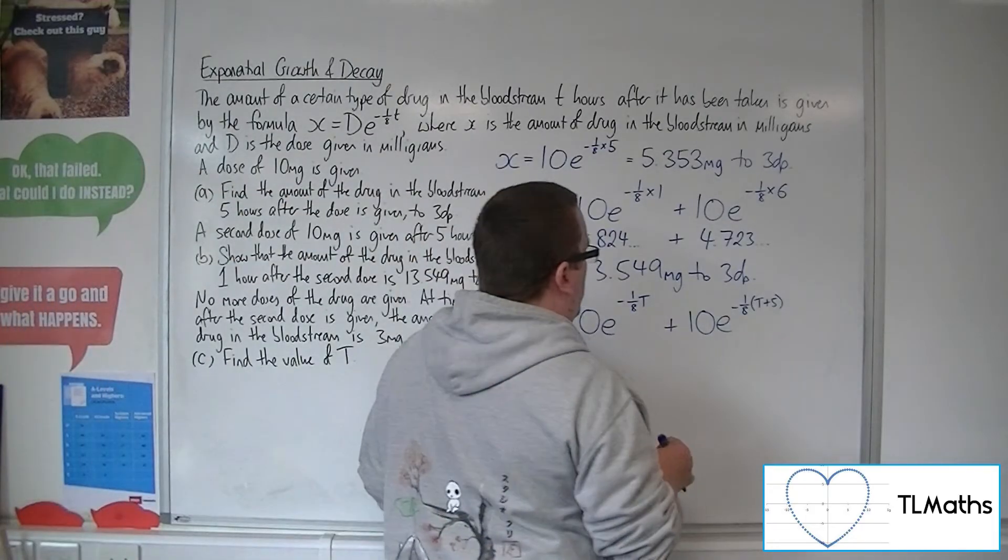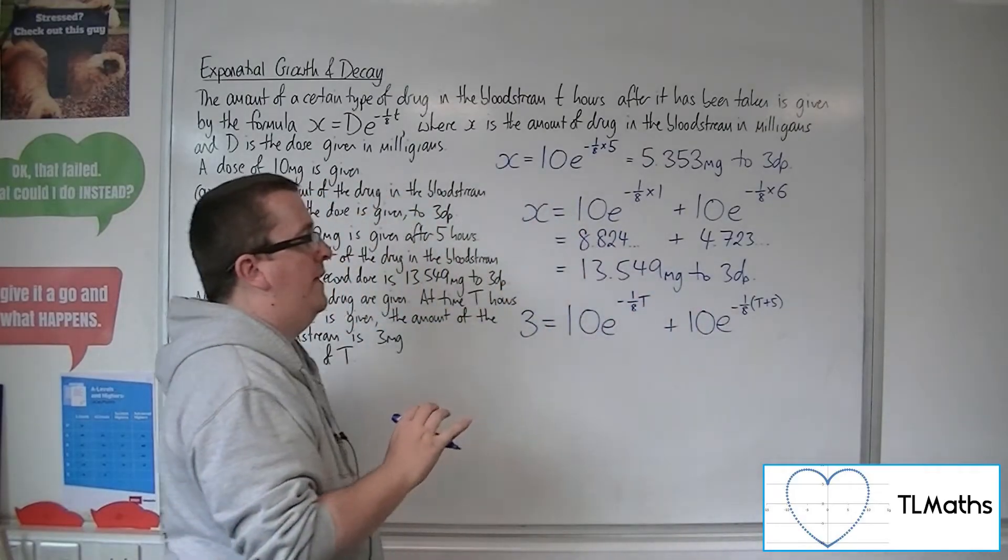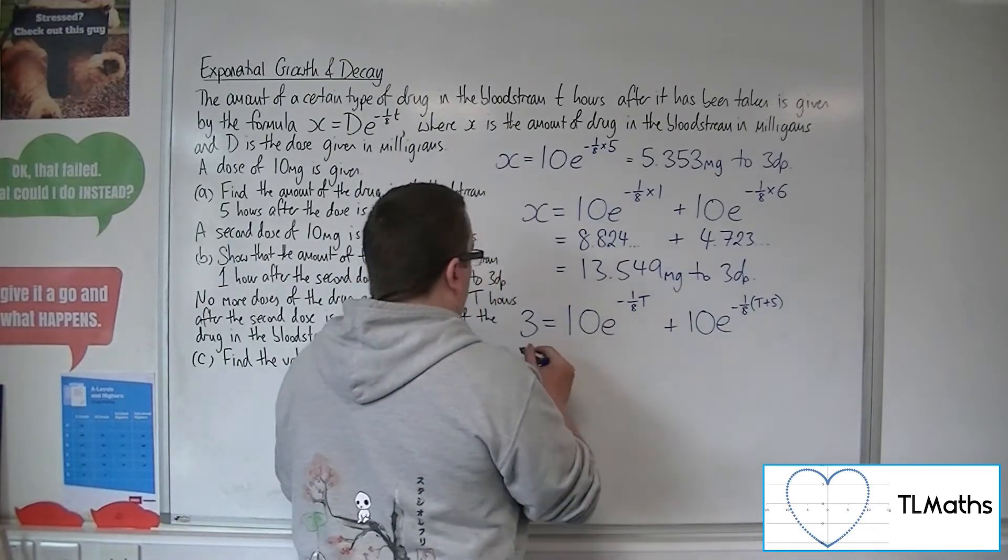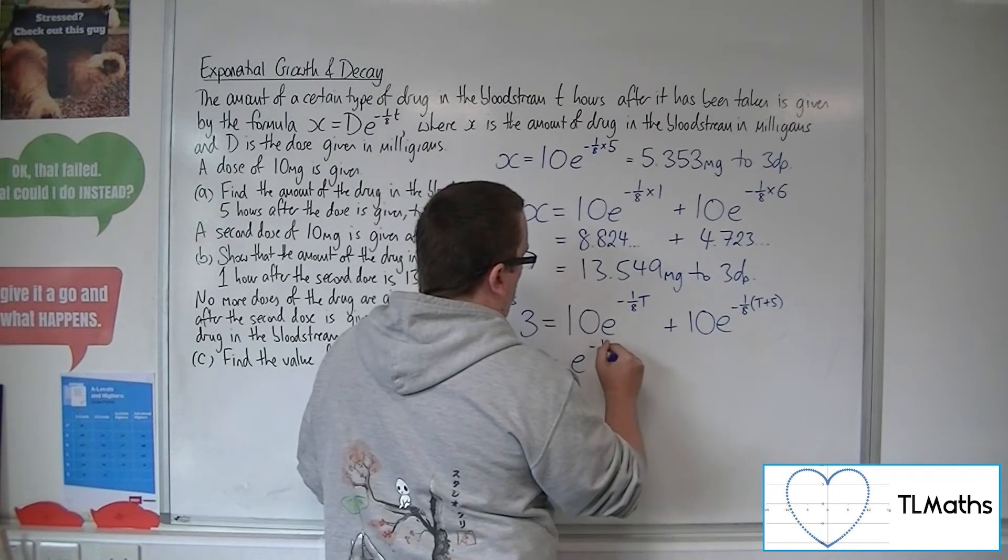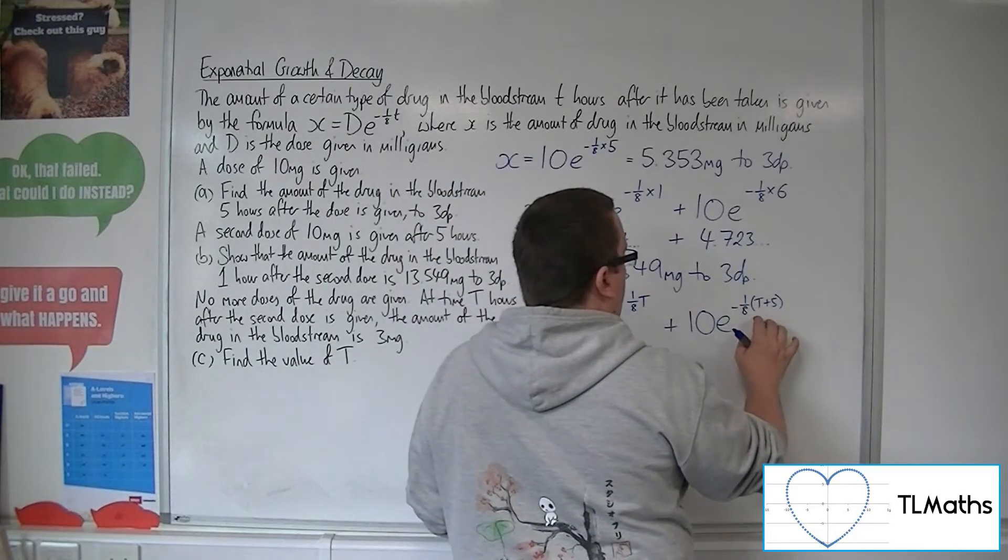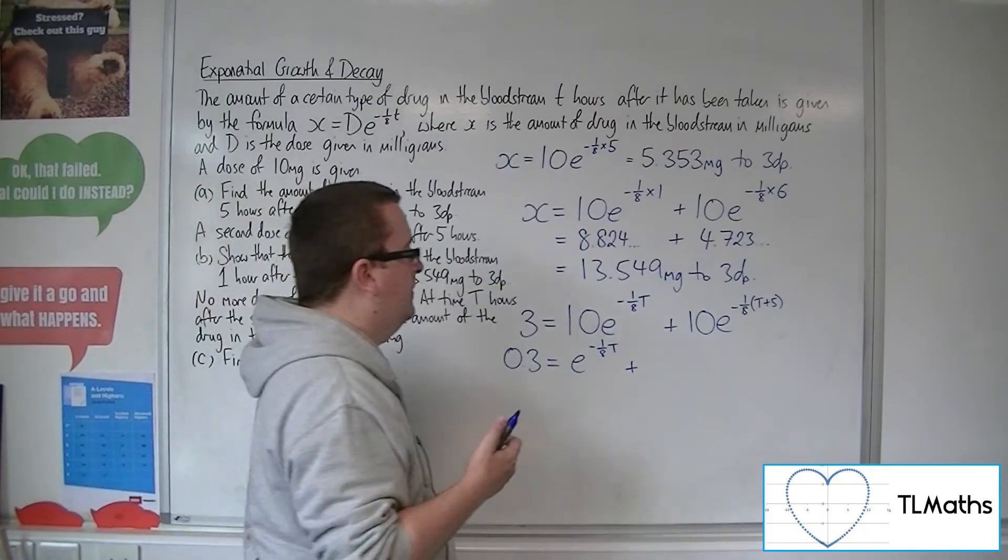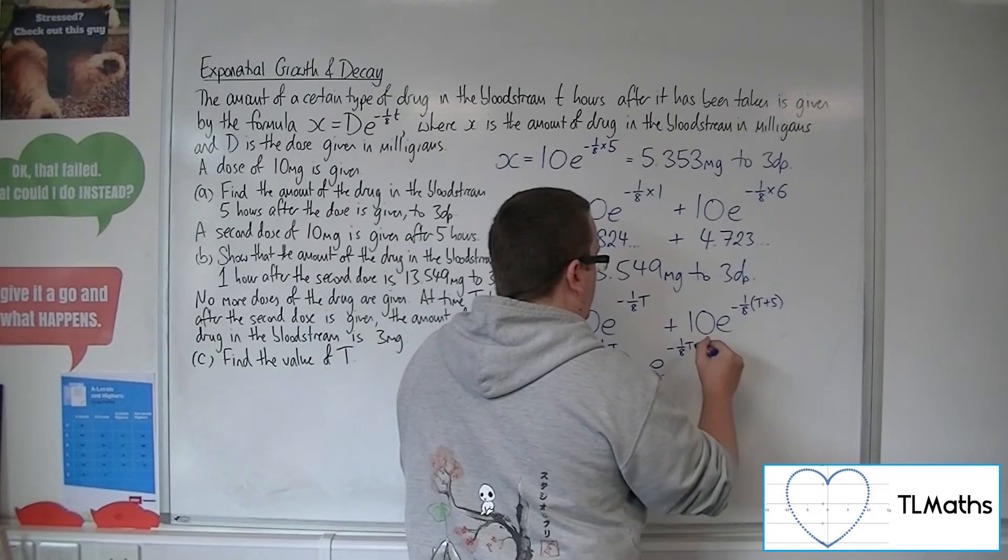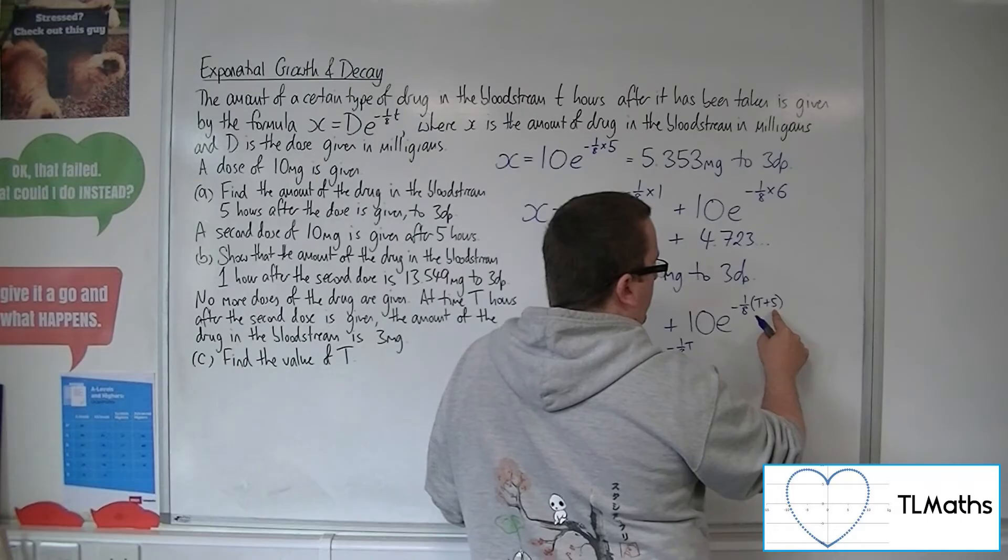Okay, so what I would do first is I would really like to simplify this and factorise it. I would divide through by 10 first, so we get 0.3 is equal to e to the minus one-eighth T plus, now for this, okay, what I would probably be suggesting is we write this as e to the minus one-eighth T. Now we multiply the minus one-eighth by the five, so minus five-eighths.